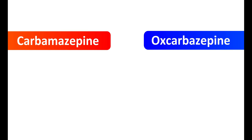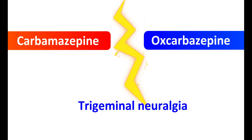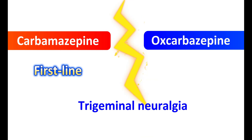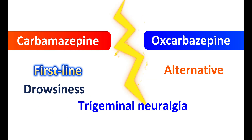The second clinical use is in the treatment of trigeminal neuralgia. For this purpose, carbamazepine serves as a first-line agent for controlling pain associated with trigeminal neuralgia. Oxcarbazepine can be used as an alternative when carbamazepine is less tolerated. Carbamazepine produces drowsiness and dizziness in people, and when these side effects are not tolerated, oxcarbazepine is used as an alternative.